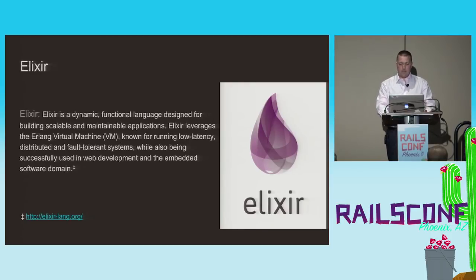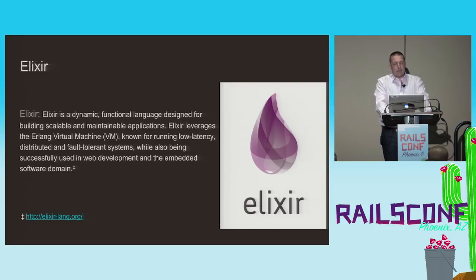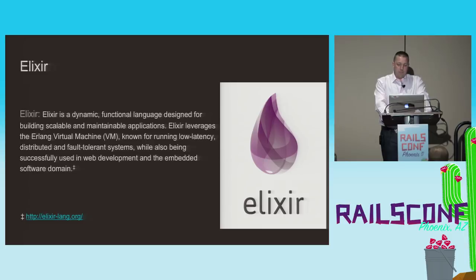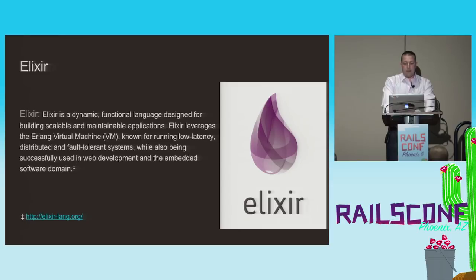Elixir is a dynamic, functional language with a syntax somewhat similar to Ruby. It was written by Jose Valim from Plataformatec, who was previously a member of the Rails core team. Elixir offers the promise of building distributed, scalable, maintainable applications that can run with very low processor overhead as well as very low latency.